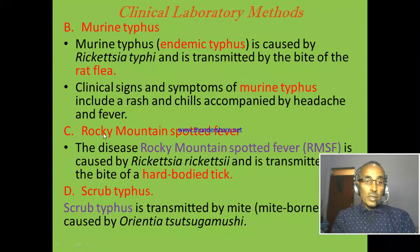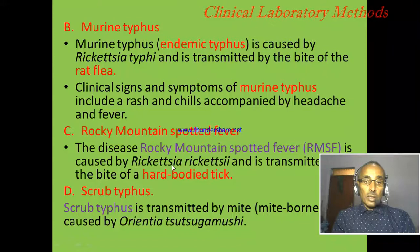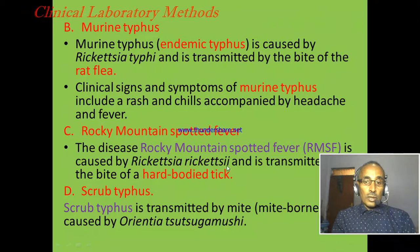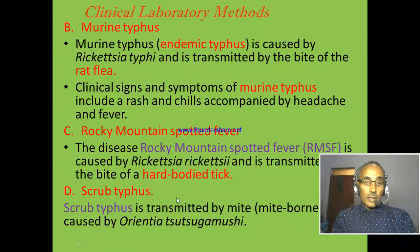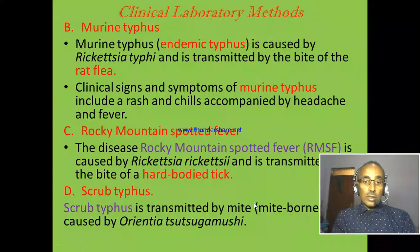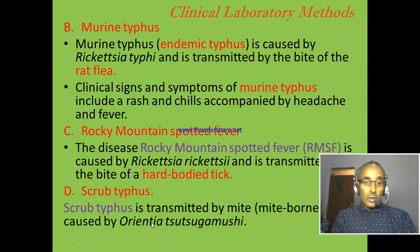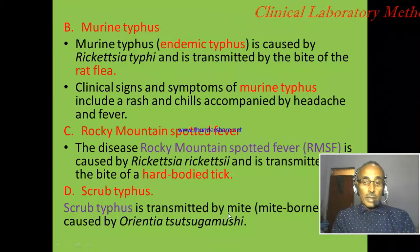The third disease is Rocky Mountain spotted fever, caused by Rickettsia rickettsii and transmitted by a hard body tick. The fourth is scrub typhus, a mite-borne disease caused by Rickettsia and transmitted by mite.